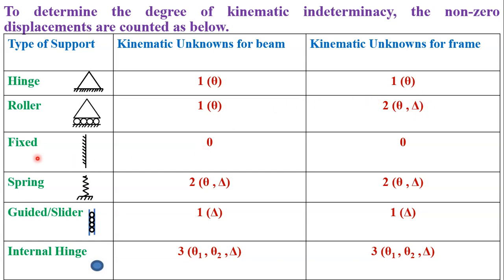In case of a fixed support, it does not permit any degree of freedom for beam as well as for frame. Because at a fixed support, the members are firmly fixed, so it neither permits rotation nor displacement in case of a beam as well as a frame.